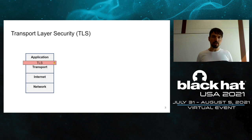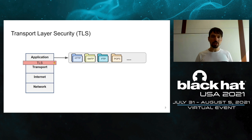Transport layer security is located between the transport and application layer in the TCP/IP stack. This means it allows us to protect any application protocol — not only HTTP, but also SMTP, FTP, POP3, IMAP, and so on.